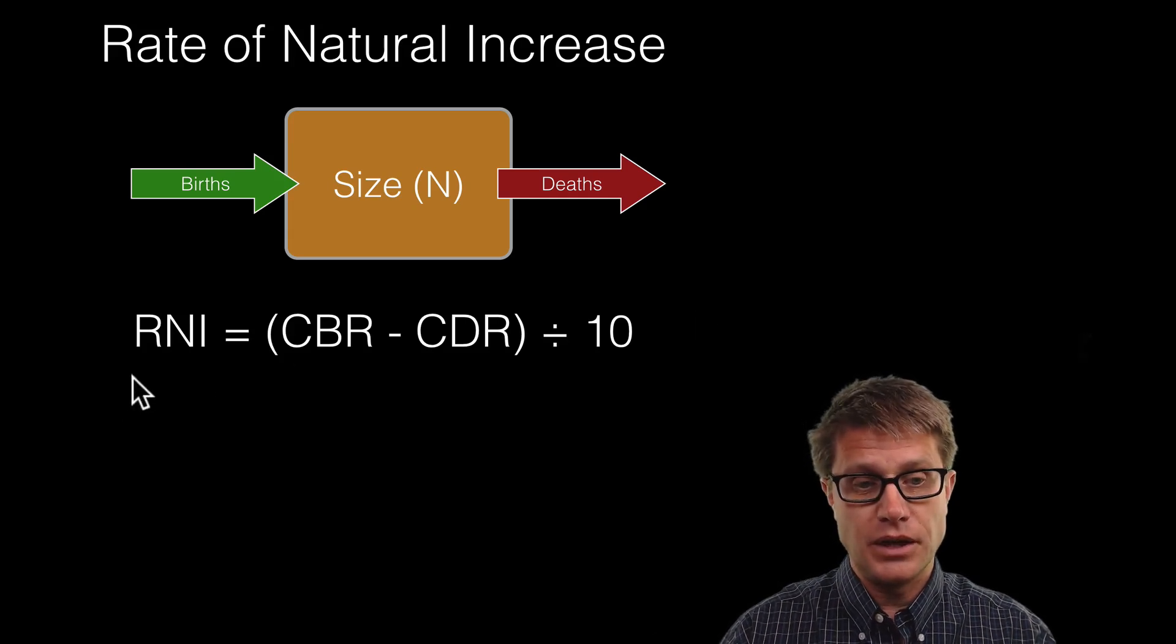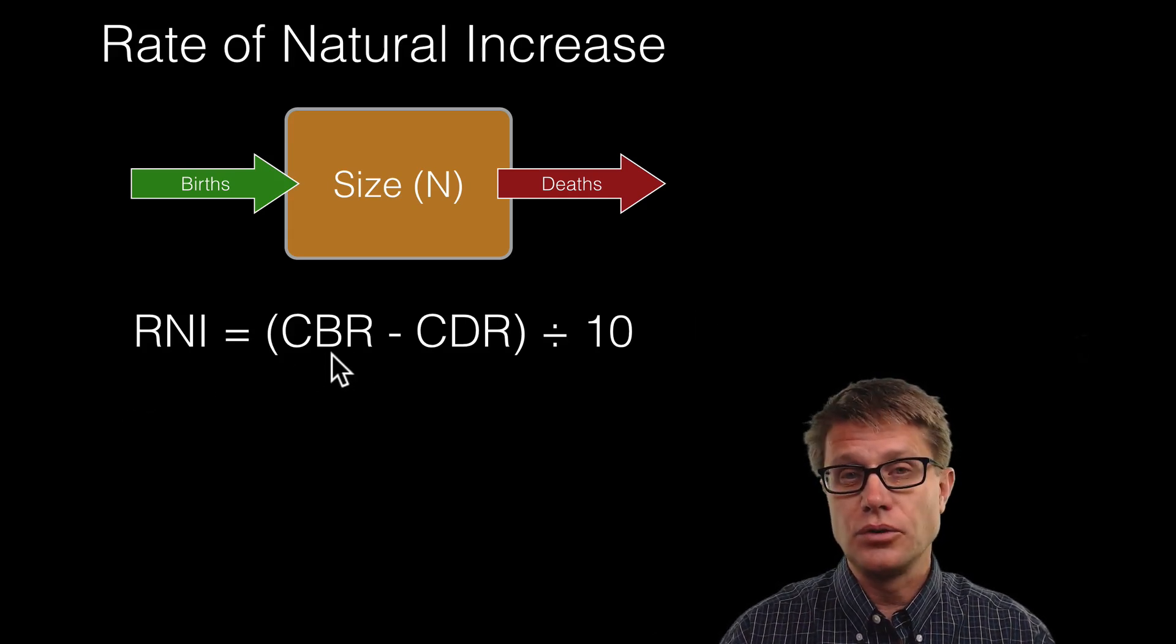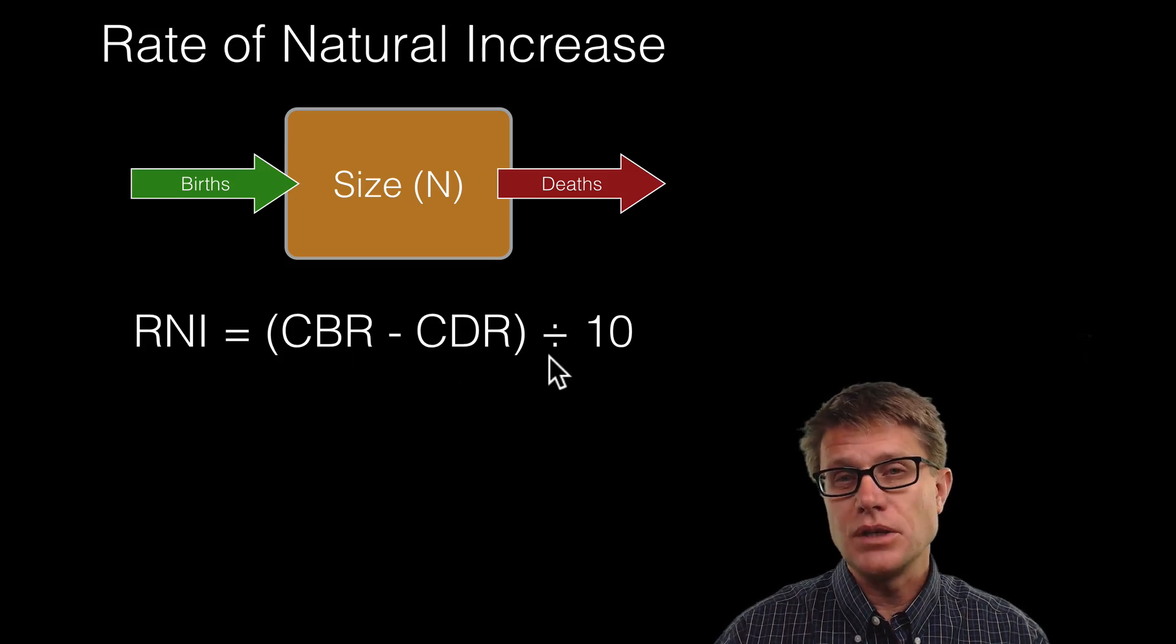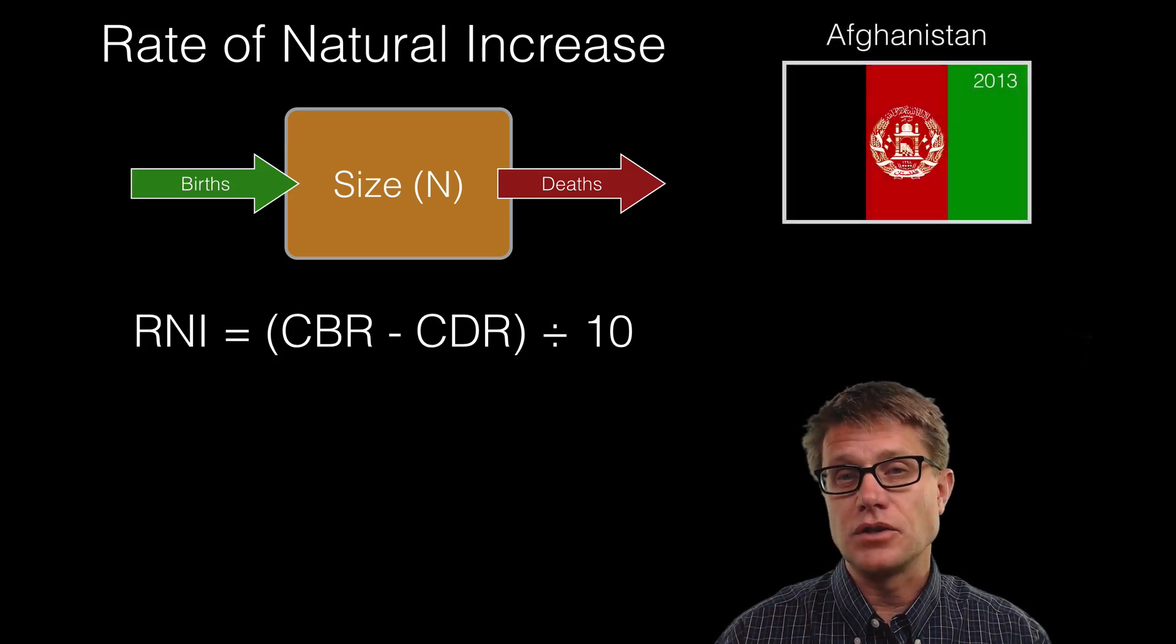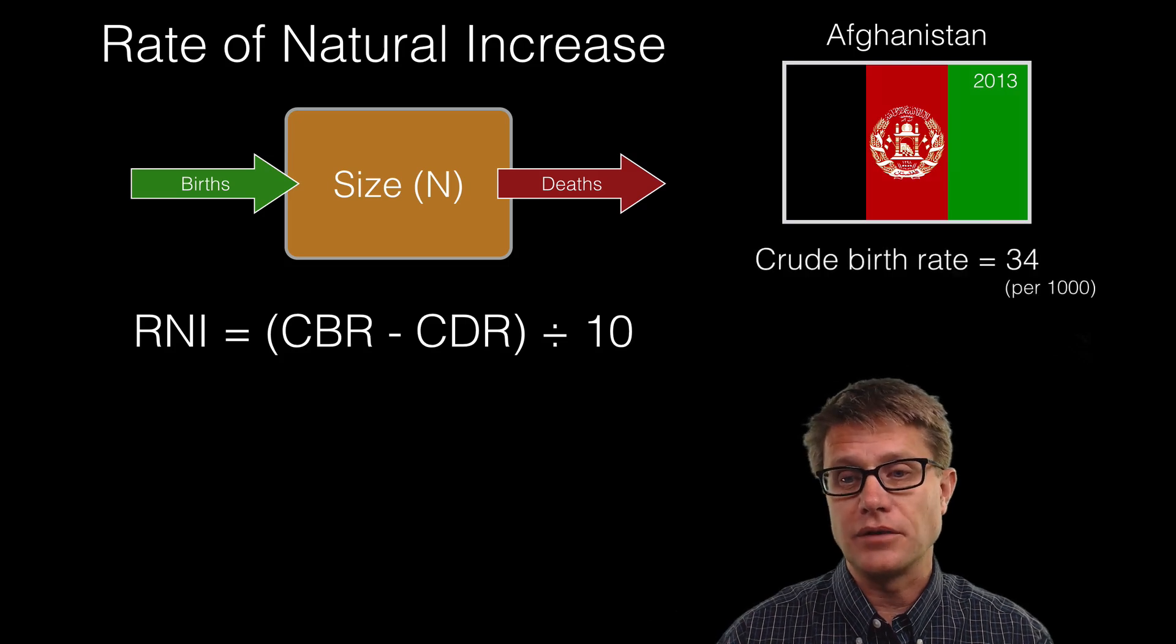And so the equation is simple. Rate of natural increase equals the crude birth rate minus the crude death rate divided by 10. And the reason we are dividing by 10 is these values are generally expressed per 1,000 people.